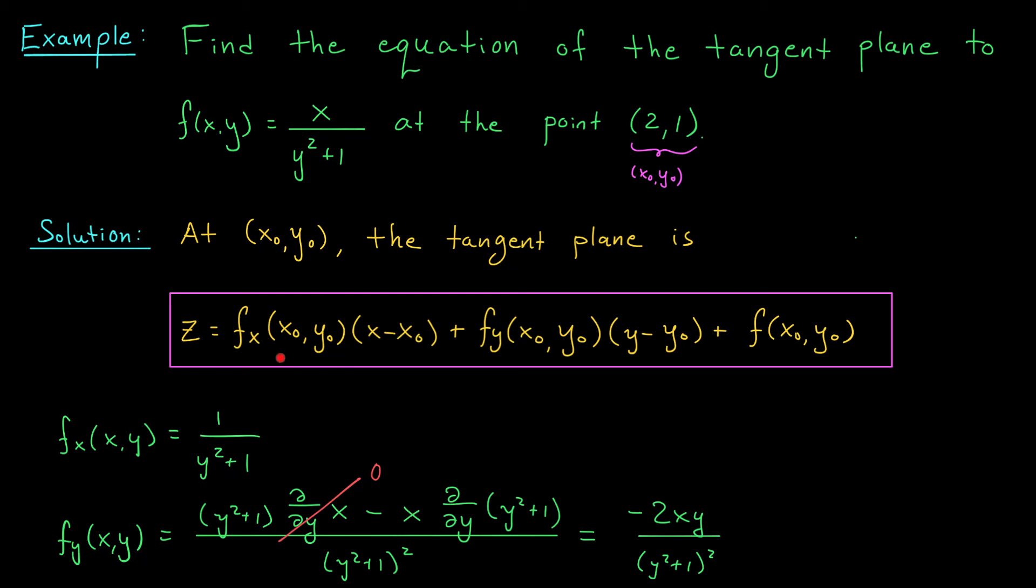At this point, we have to plug in the point x-naught, y-naught to our partial derivatives. By plugging into fx, we get that fx of (2, 1) is 1 over 1 squared plus 1, or 1 half. By plugging into fy, we get that fy of (2, 1) is minus 2 times 2 times 1 divided by 1 squared plus 1 squared. I'll let you clean this up, but what you should get is minus 1. Now let's put all the pieces together to get the equation of our tangent plane.